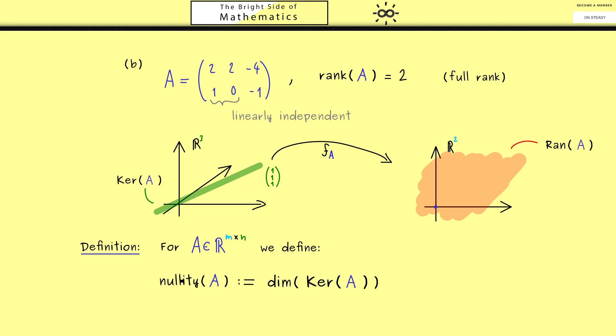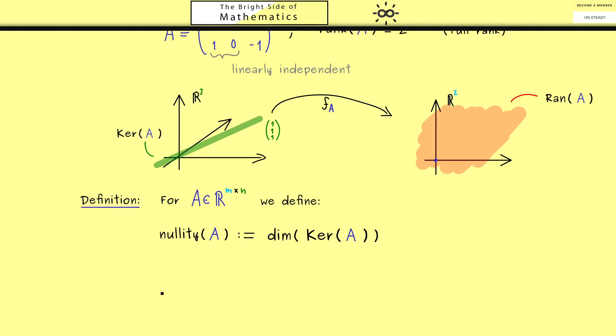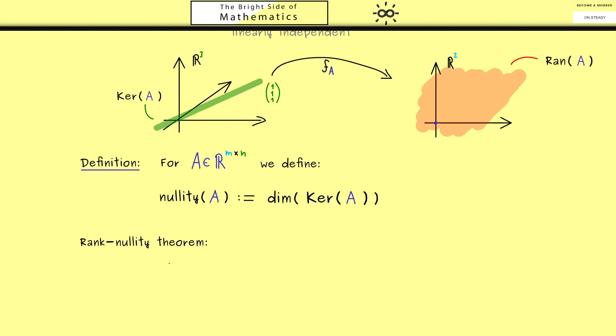Moreover, please note the nullity is a non-negative integer between zero and n. Okay, with this you now know these two terms here, which explain the name of our theorem. However, I can also tell you that some people omit the term nullity in the name of the theorem altogether. It makes sense because rank of a matrix is usually a term which is used more often than nullity.